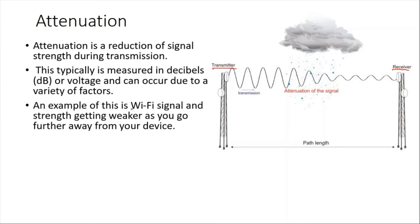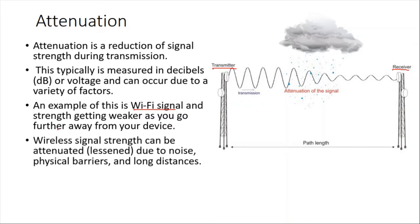For example, we can see attenuation when you move away from your Wi-Fi signal — the signal becomes weaker and weaker. Wireless signal strength can be attenuated due to noise, physical barriers, and long distances. If the signal is carried over long distances, attenuation can take place. If there is a barrier between the transmitter and receiver, or due to electromagnetic interference, attenuation can also occur.